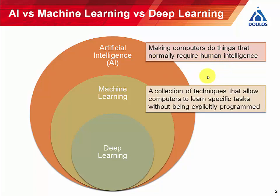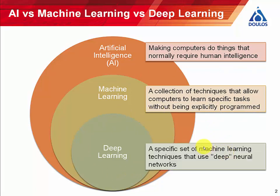Within the field of artificial intelligence, machine learning is a specific collection of mathematical algorithms that allow computers to learn certain specific tasks without being explicitly programmed to do those tasks. Deep learning is just a specific set of machine learning algorithms that makes use of so-called deep neural networks. A neural network is a mathematical model inspired by animal brains, and a deep neural network consists of multiple layers — hence the term "deep".